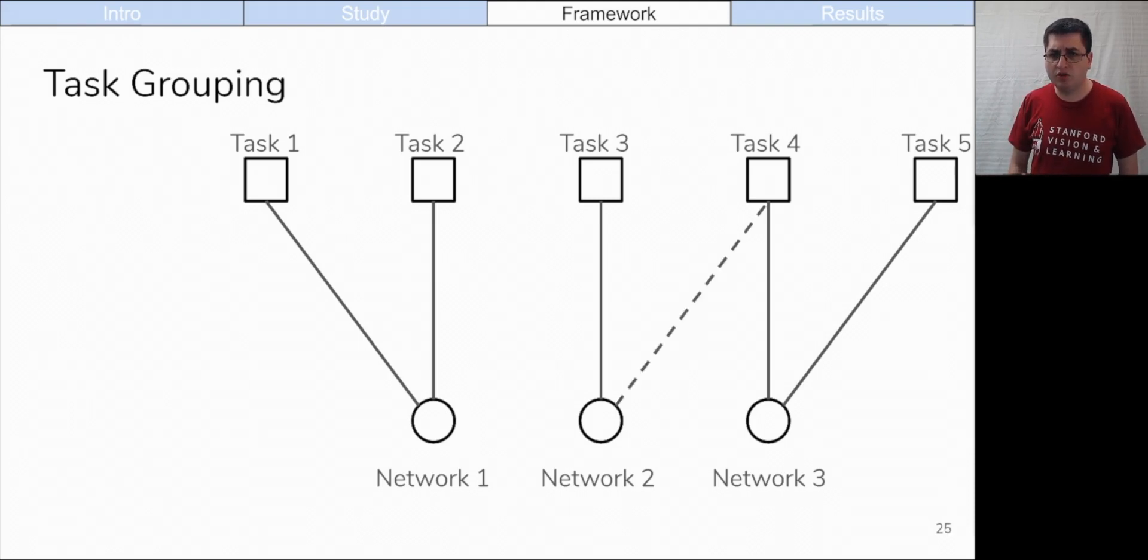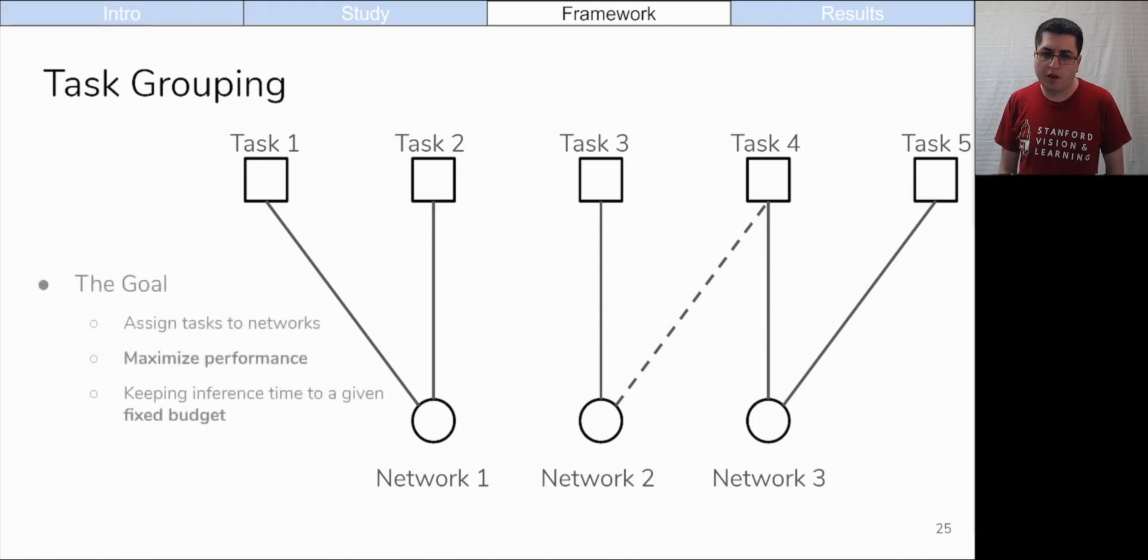Remember how training with normals was good for the other task but bad for normals? We find that it is often advantageous to allow for a network to include a task that is better solved by another network because the additional task improves the performance of the network on its other tasks. Decoders for these auxiliary tasks are discarded at test time. We propose a computational framework for assigning tasks to networks that achieves the best total performance overall tasks solved while keeping inference time to a given budget.